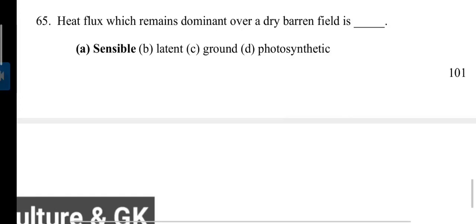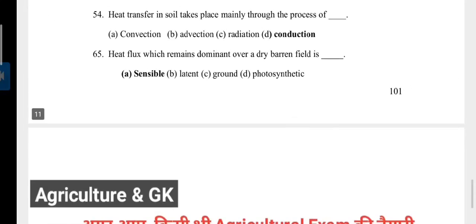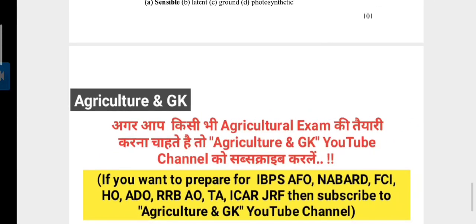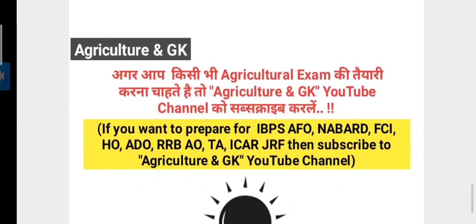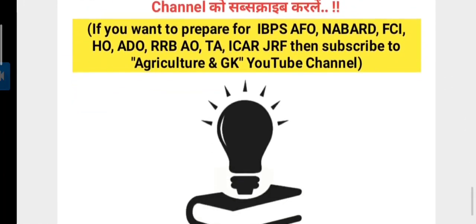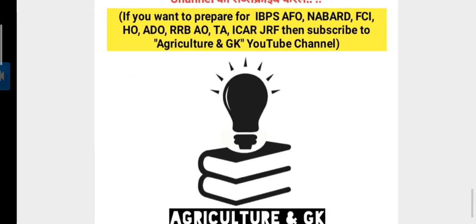Heat flux which remains dominant over a dry barren field is sensible heat. Sensible heat is the form of heat which, moving from one place, changes the temperature of the system while not changing the phase of the system. Thank you everyone. I hope all of these MCQs help for your future. If you have any doubt about this video, please comment and like this video and follow us on Instagram.